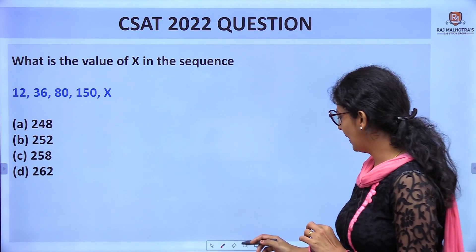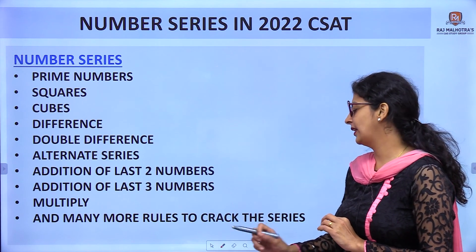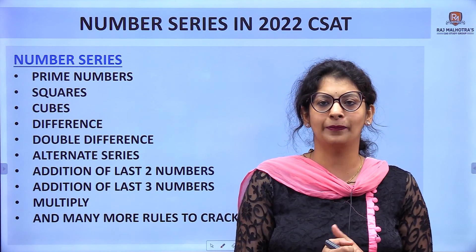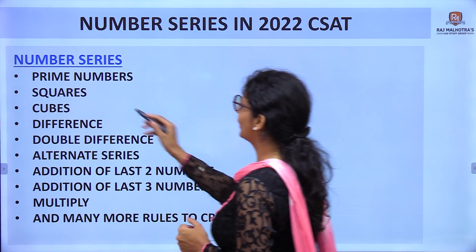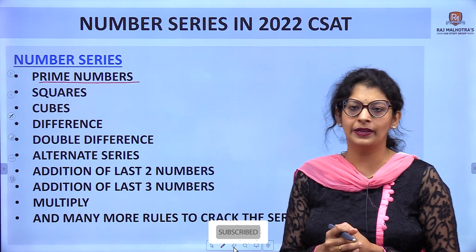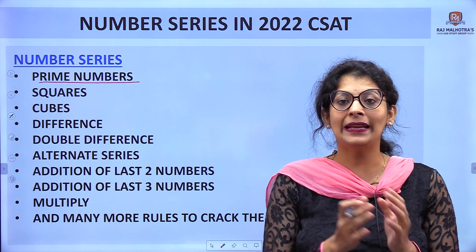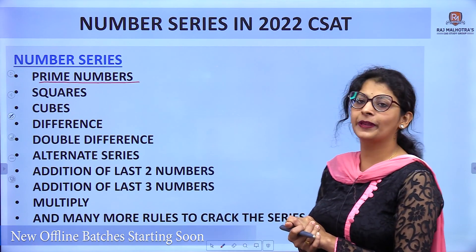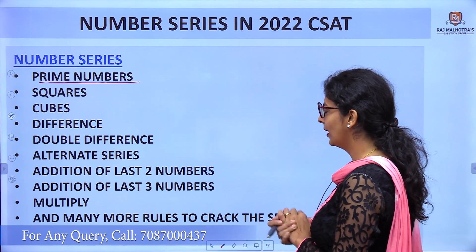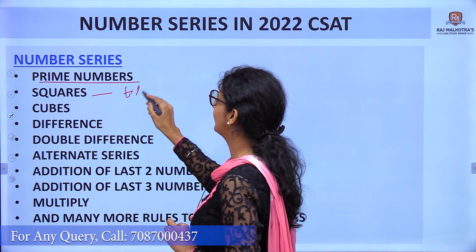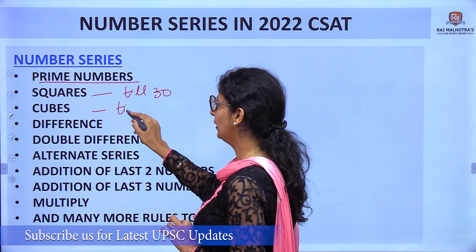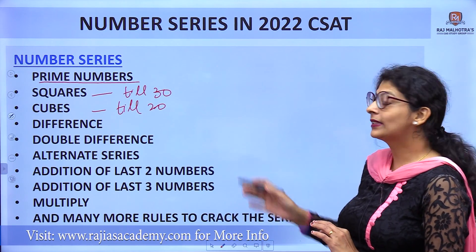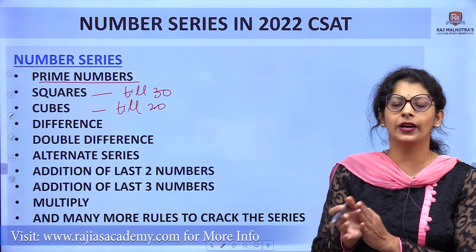Let's clear the concept first. In number series we don't have hard and fast rules to crack the question. We have to learn some things: prime numbers are those which have only two factors - the number itself and one. The remaining numbers are composite numbers. You have to learn the squares till 30, cubes till 20. Next, you have to check difference and double difference.